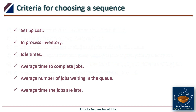What are the criteria for choosing a sequence? The criteria may include setup cost, process inventory, idle time, average time to complete a job, average number of jobs waiting in the queue, and average time the jobs are late. These criteria will be discussed in detail after a few slides.